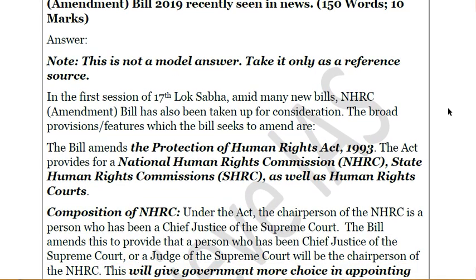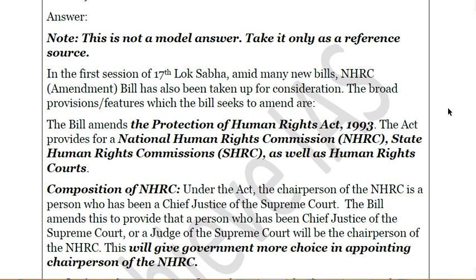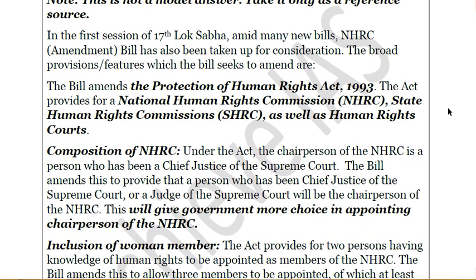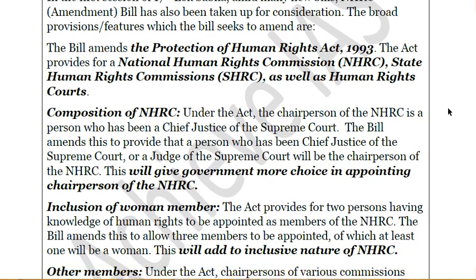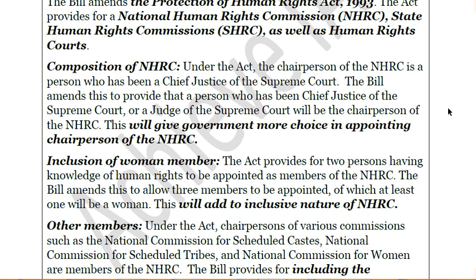The NHRC was recently in the news. This bill basically amends the Protection of Human Rights Act 1993. You can start by giving an idea of what the 1993 Act is and its composition. Under the original Act, the chairperson of the National Human Rights Commission had to be a retired Chief Justice of the Supreme Court. The bill now expands this so that any retired judge of the Supreme Court can also be chairperson. This gives the government more choice in appointing a more competent person to the position.